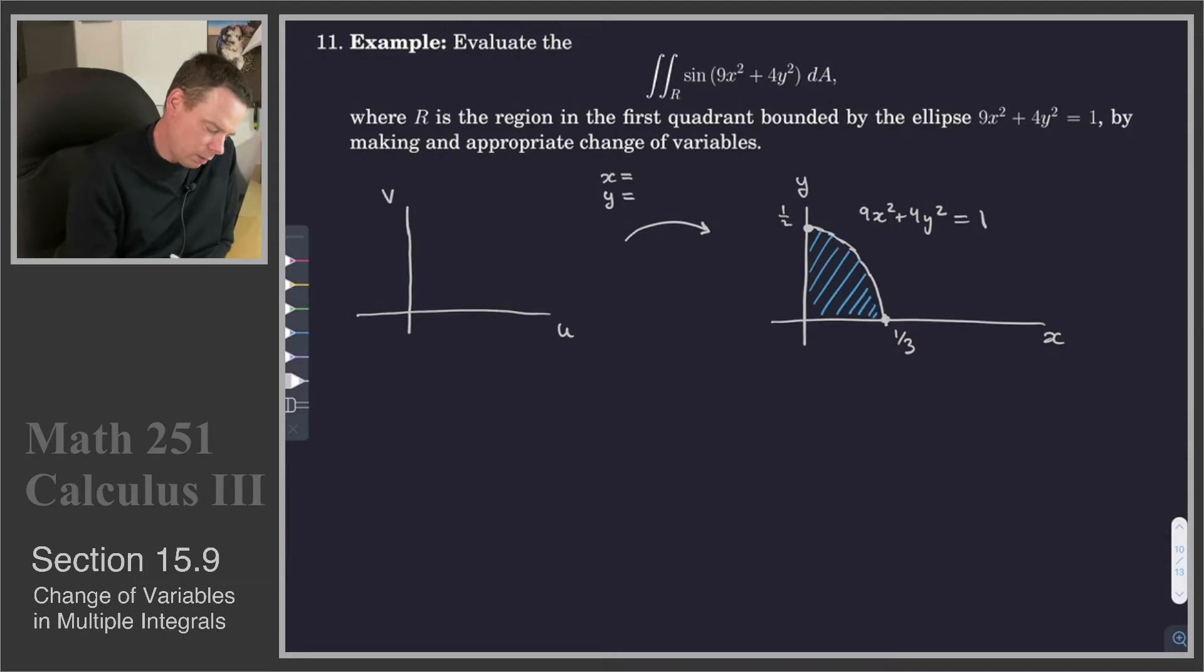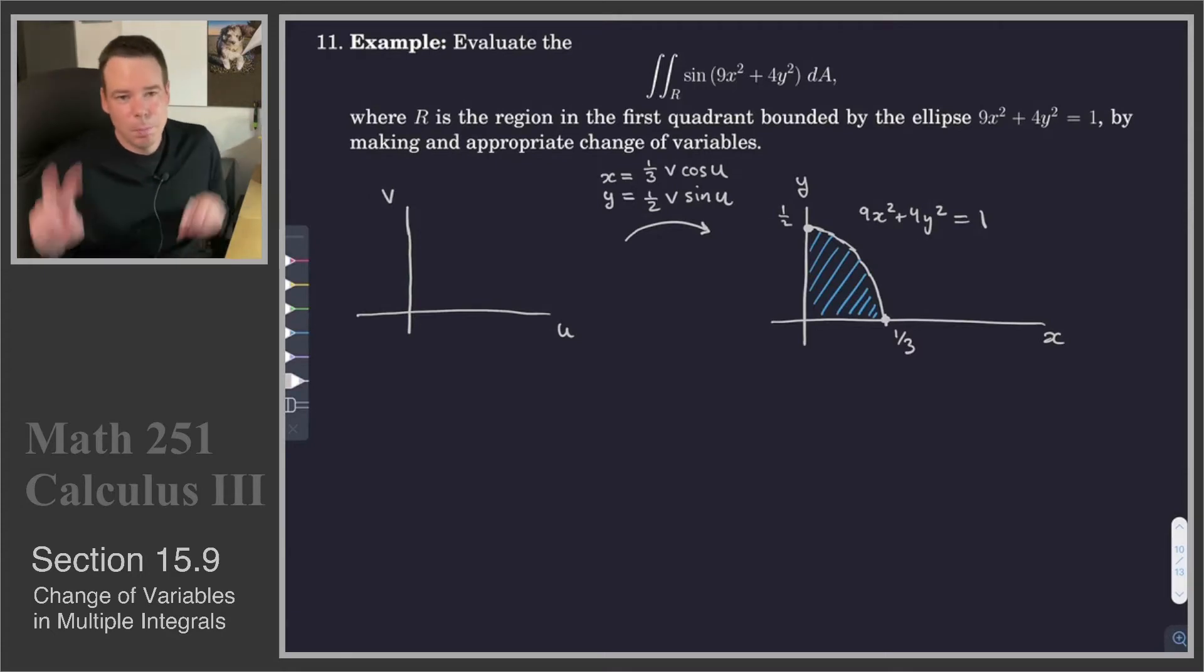So what it is, is I will say x is going to be 1/3 v cos u, and y is 1/2 v sin u. So you might say, well how did I come up with that? Well, here I'm thinking if I get rid of the 1/3 and the 1/2, I really just have polar coordinates, but I'm using v in place of r and u in place of theta. So I've thrown the 1/3 in there in front of the x so that x doesn't go any further than a third. And I put the 1/2 in front of the y so that y doesn't go any higher than a half, and that will trace out the ellipse.